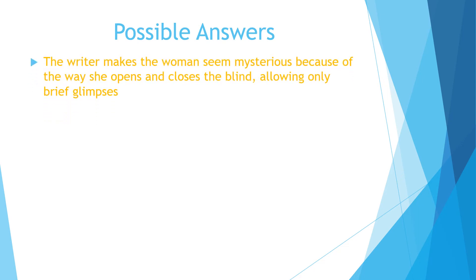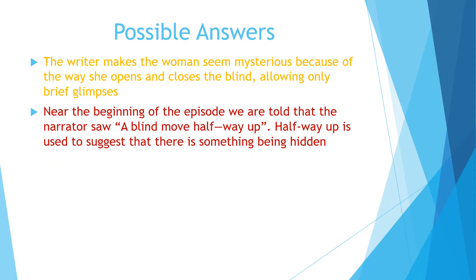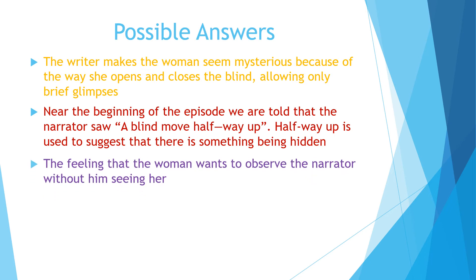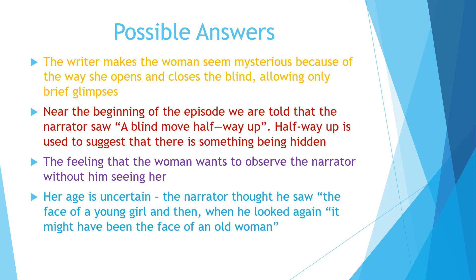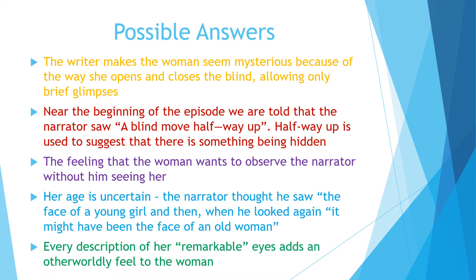The writer makes the woman seem mysterious because of the way she opens and closes the blind, allowing only brief glimpses. Near the beginning of the episode, we are told that the narrator saw a blind move halfway up. "Halfway up" is used to suggest that there is something being hidden — the feeling that the woman wants to observe the narrator without him seeing her. Her age is uncertain: the narrator thought he saw the face of a young girl, and then, when he looked again, it might have been the face of an old woman. Every description of her remarkable eyes adds an otherworldly feel to the woman.